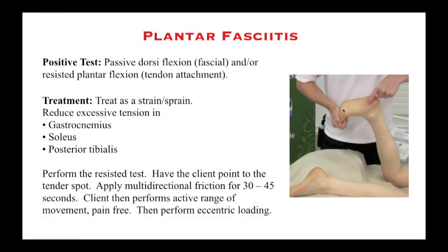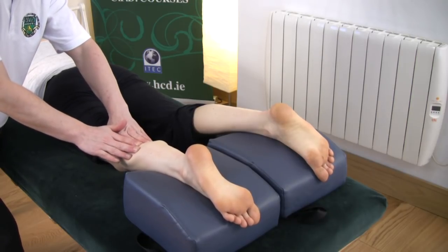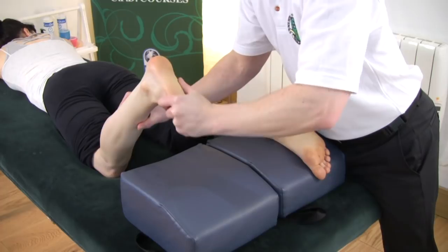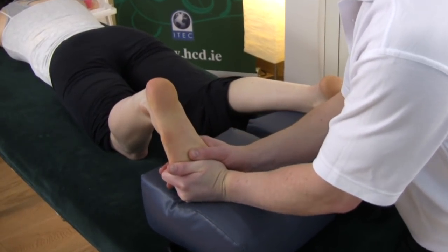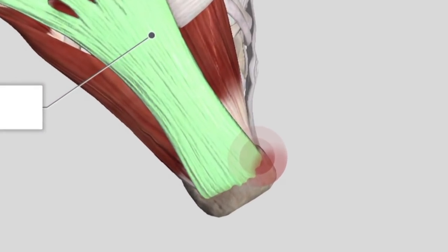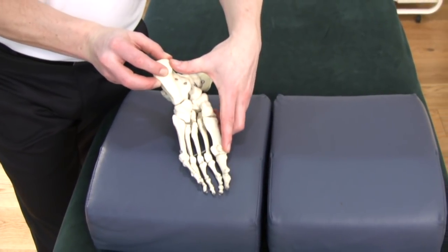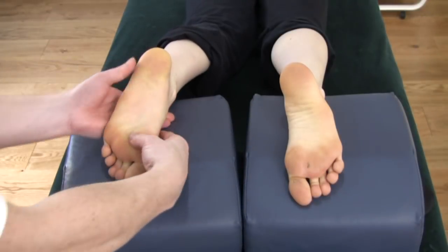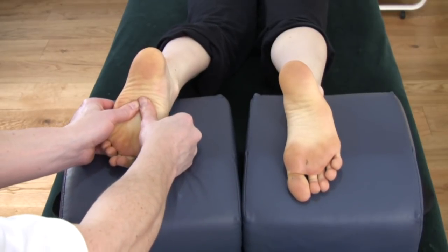It's generally treated as a strain or sprain — most people consider it more like a ligament because it connects bone to bone. The first intent would be to reduce the excessive tension found in gastrocnemius, particularly in soleus, and almost certainly in posterior tibialis. A resisted test should then be performed again, because sometimes there is simple ligament pain: the area is painful due to the stress placed upon it, there's no disorganized collagen, and once the tension is taken off the tissues, the issue may resolve.